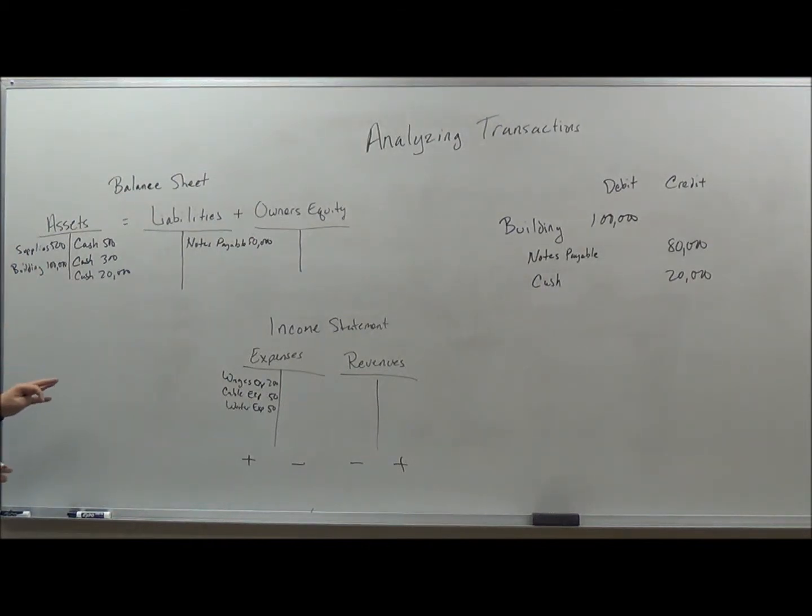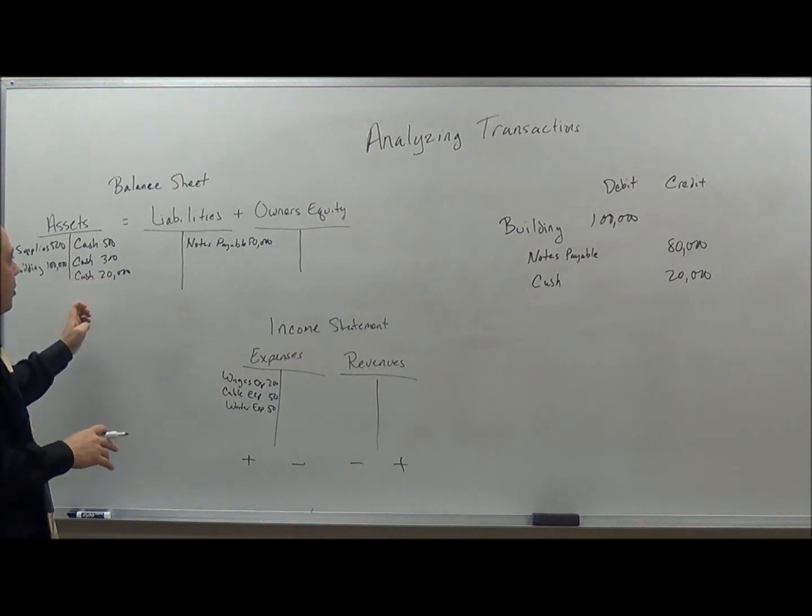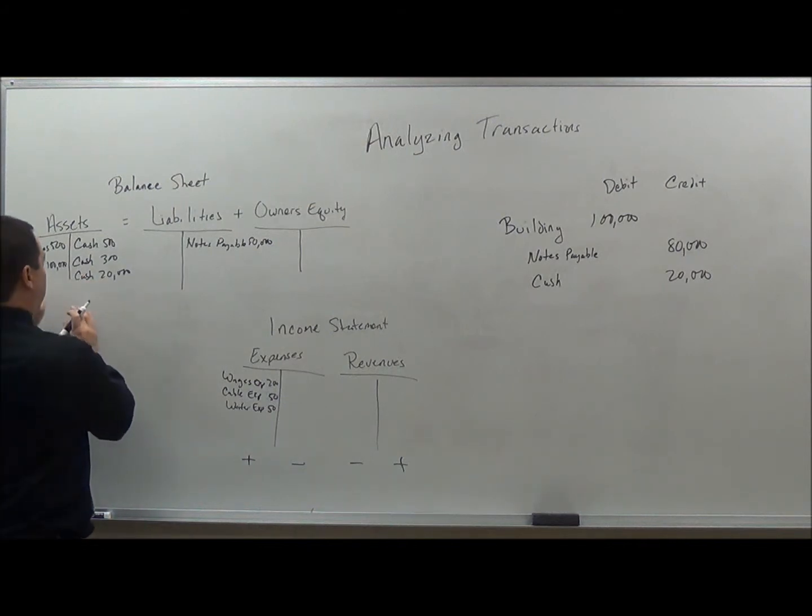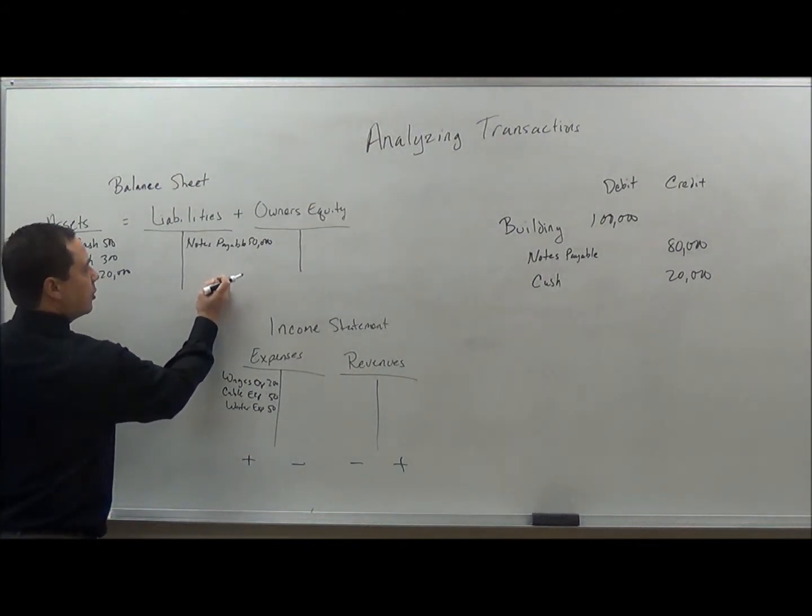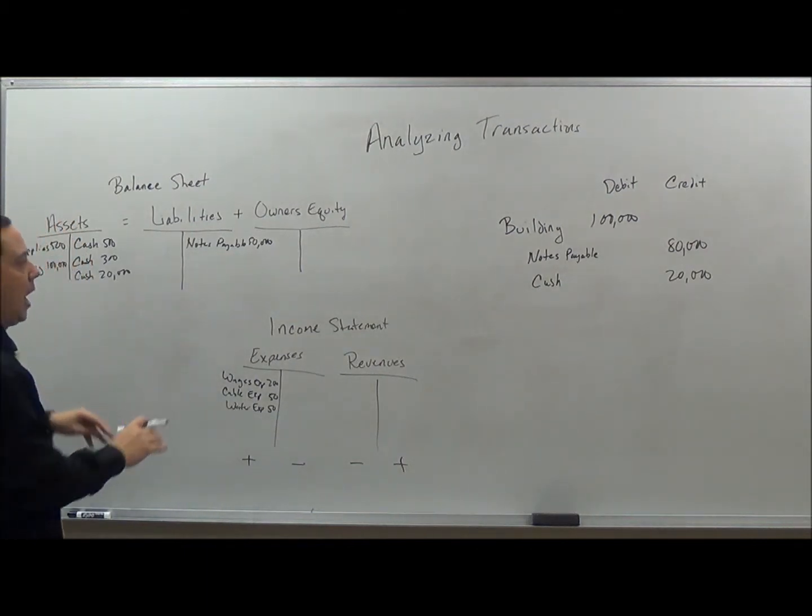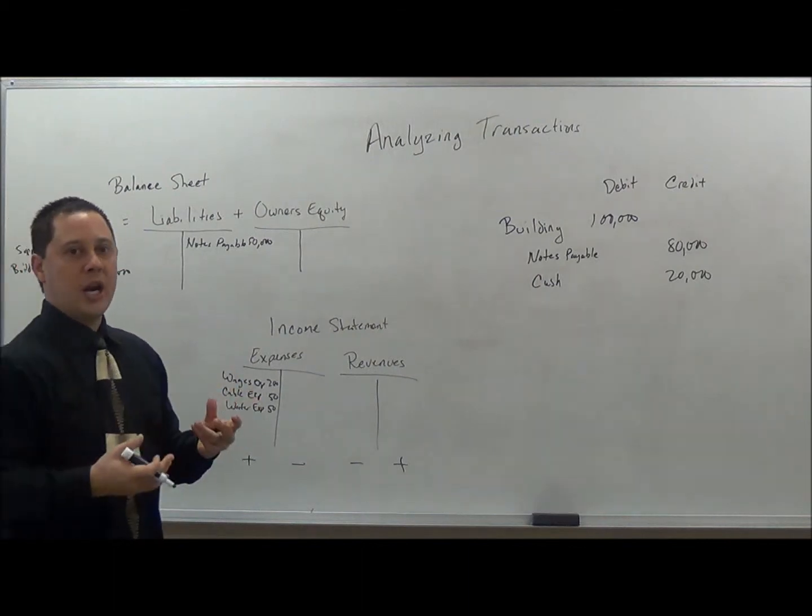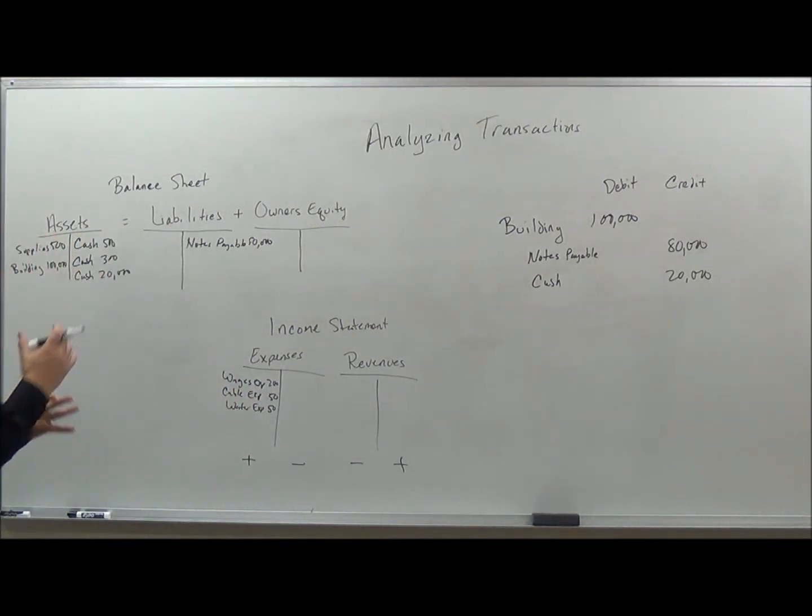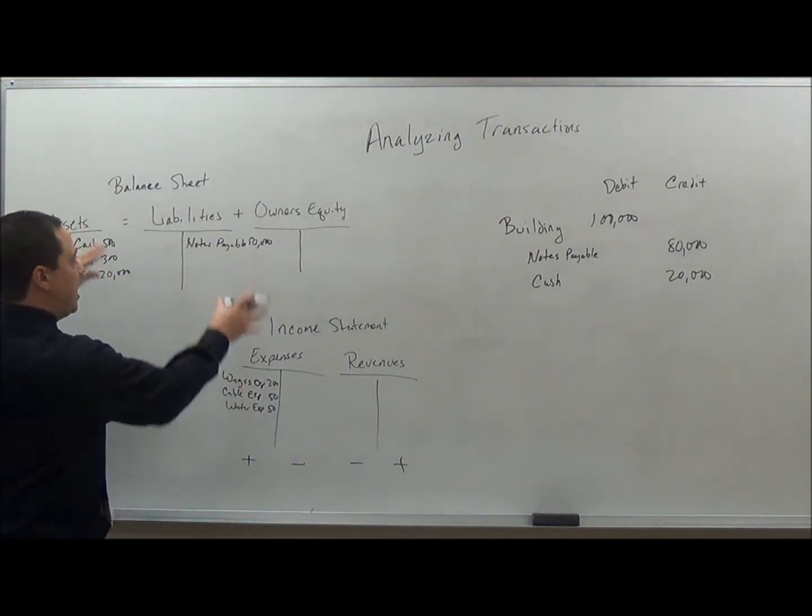Again, so if you look at this equation here, if I take the $100,000 minus the $20,000, this side equals $80,000 on the debit side. And then here, you'll see the notes payable also equals $80,000. So I have, again, I am balanced. And so those are some equations that will help you understand what happens in each of these transactions and how they affect each of these areas.